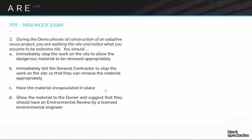The question is: you've come across this asbestos tile, what should you do? Option A: immediately stop the work on the site to allow the dangerous materials to be removed appropriately. Option B: immediately tell the general contractor to stop the work so they can remove the material appropriately. Option C: have the material encapsulated in place. Option D: show the material to the owner and suggest they have an environmental review.